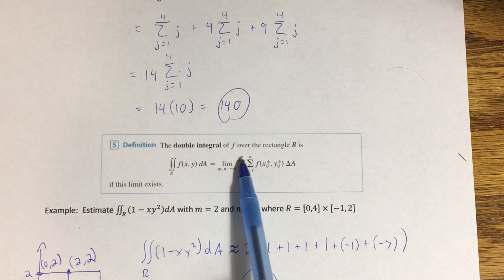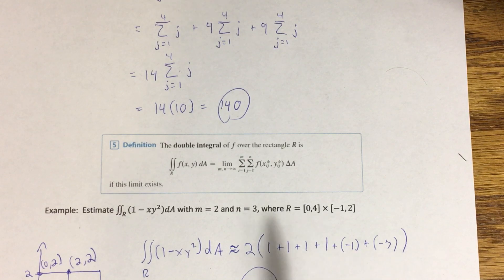But if we take the limit as both m and n go to infinity, that's increasing the number of sub-intervals that we're breaking the [a,b] and the [c,d] into. So that's, by consequence, giving us more and more sub-rectangles in that big grid, giving us better approximation.